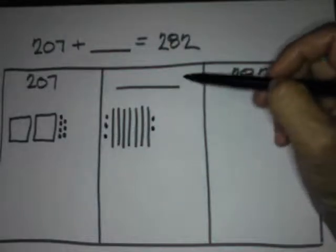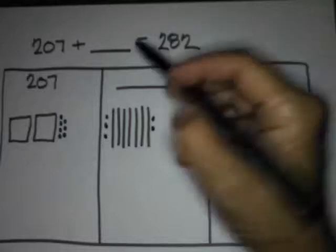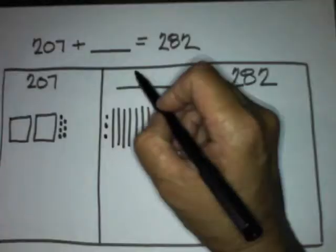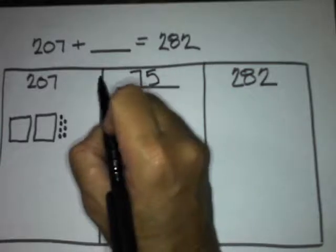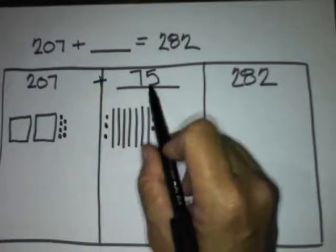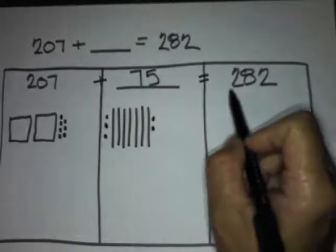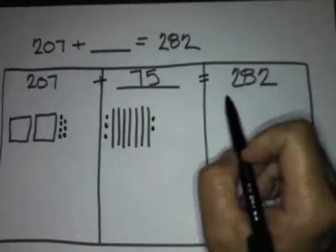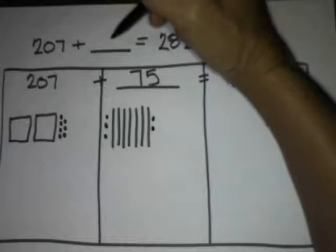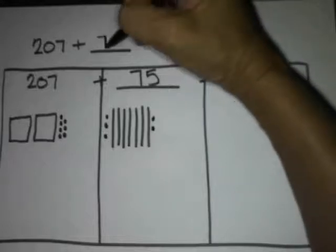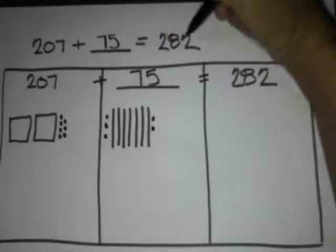So, what number gets written in the unknown? 75. And if 207 plus 75 equals 282, we know that 207 plus 75 equals 282.